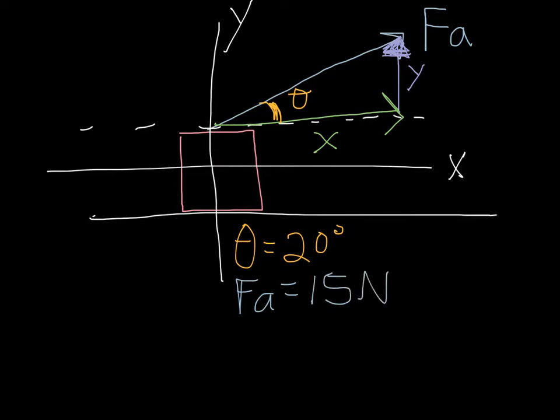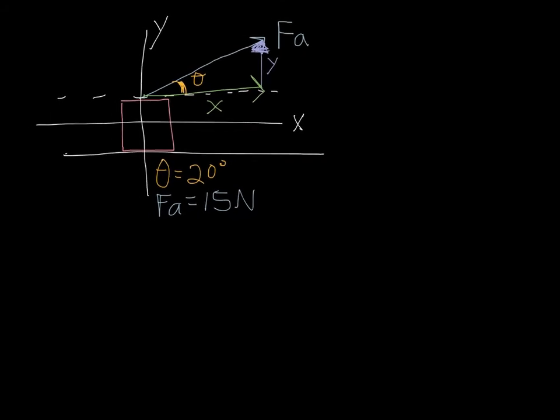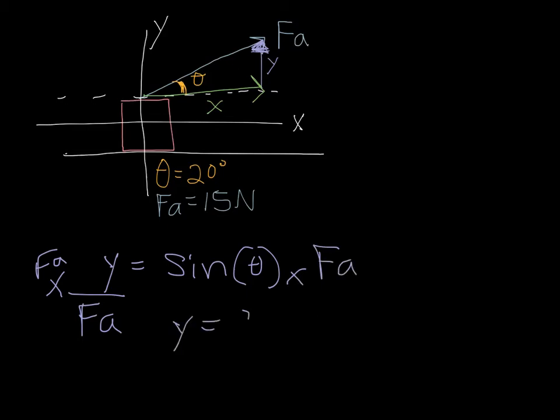Then I'm going to calculate now my x and y components. So I know, let me get back. So I know that for my y, well, we know that opposite over hypotenuse is sine. So if I say y over my fa, then that's equal to the sine of theta. Well, then if I multiply both sides by fa force applied, then I get y is equal to sine of theta times force applied, just like that.